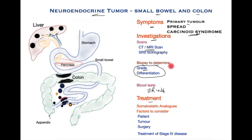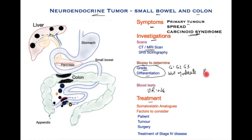There is grade G1, which indicates a good prognosis; G2 is intermediate; and G3 is poor prognosis. Differentiation describes how closely the tumor matches the original tissue, and this is also classified in three categories: well differentiated, meaning it is quite similar to the original tissue; moderately differentiated; or poorly differentiated, where there is no similarity. Having this information makes it easier for clinicians to make judgments about the patient's prognosis and what treatments might be appropriate.